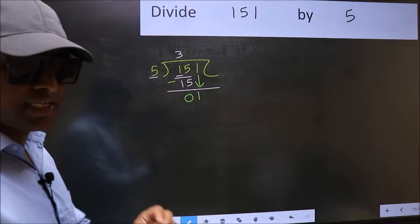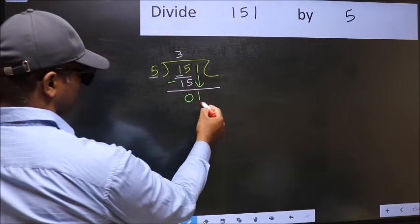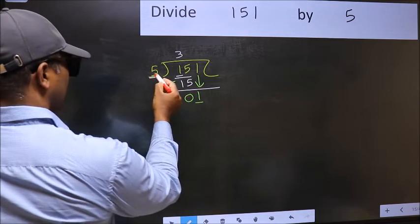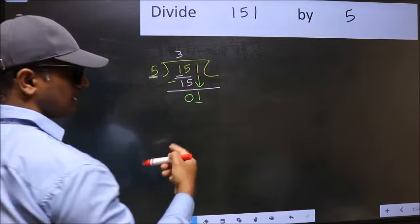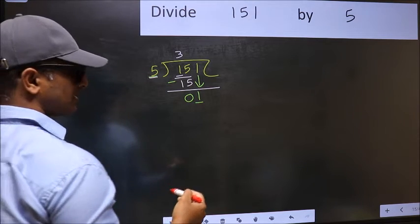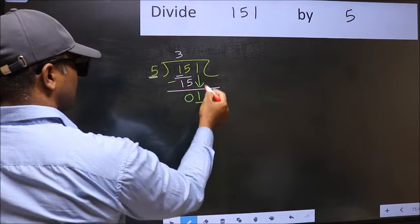And the mistake is this. Here we have 1 and here 5. 1 is smaller than 5. So what many do is, they directly put dot and take 0.